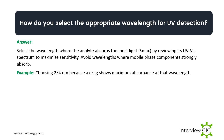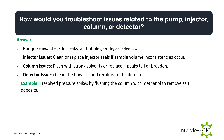How do you select the appropriate wavelength for UV detection? Select a wavelength where the analyte absorbs the most light by reviewing its UV-Vis spectrum to maximize sensitivity, and avoid wavelengths where mobile phase components strongly absorb. Example: choosing 254 nm because a drug shows maximum absorbance at that wavelength.